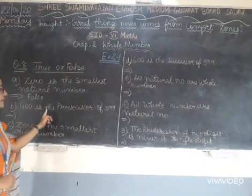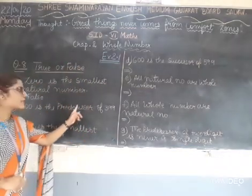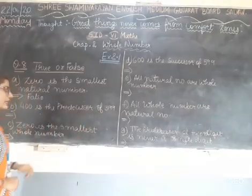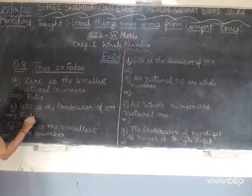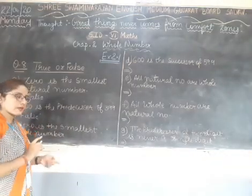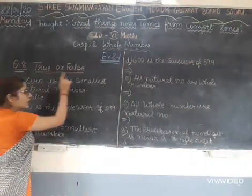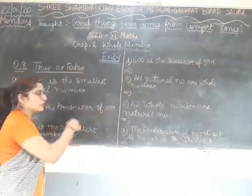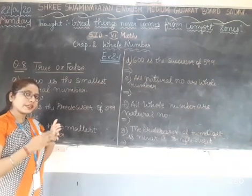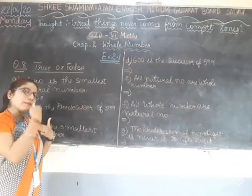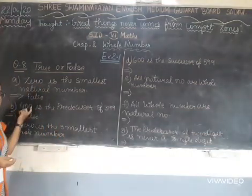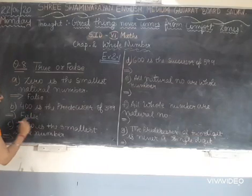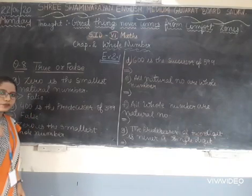400 is the predecessor of 399. This is false. Why? Because predecessor means previous number. But 400 comes after 399 — 399 ke baad 400 aata hai. So this is the successor, not predecessor. The statement is false.